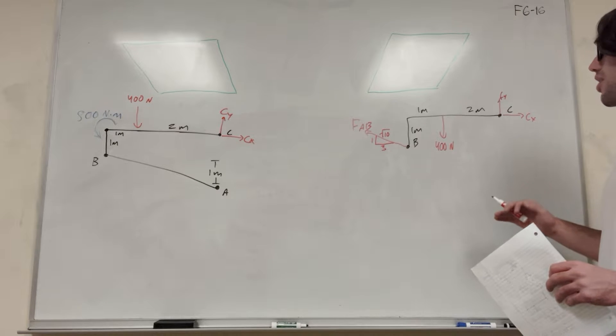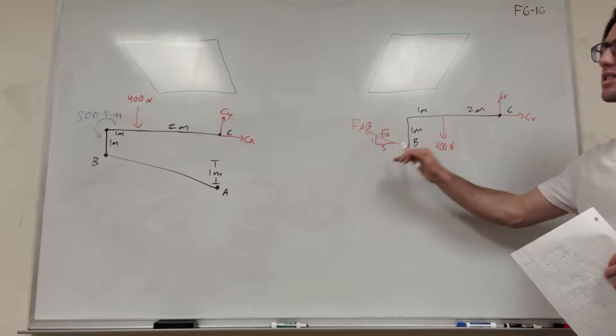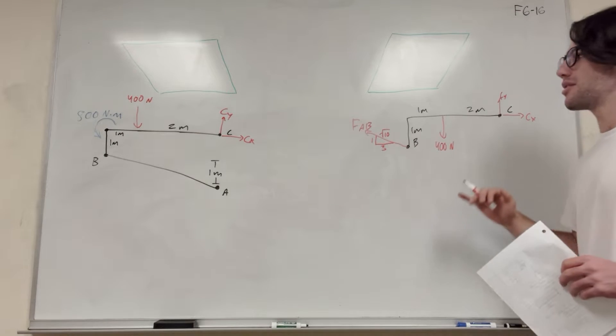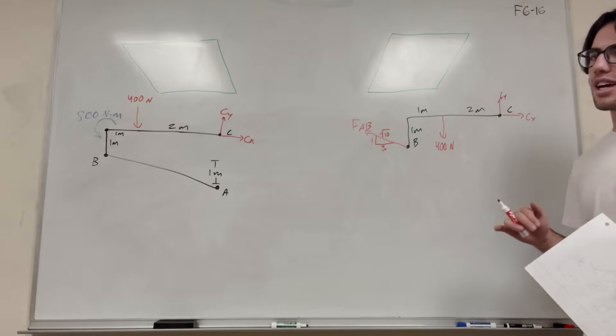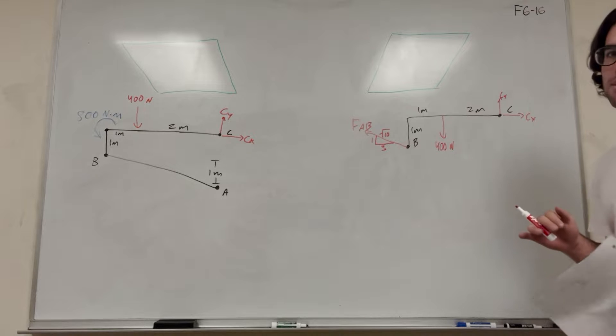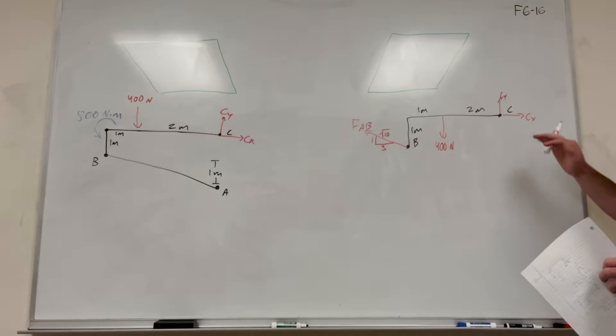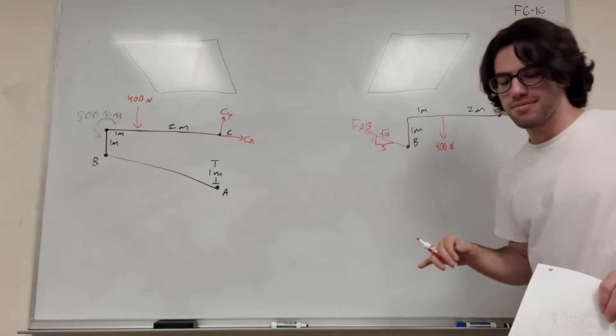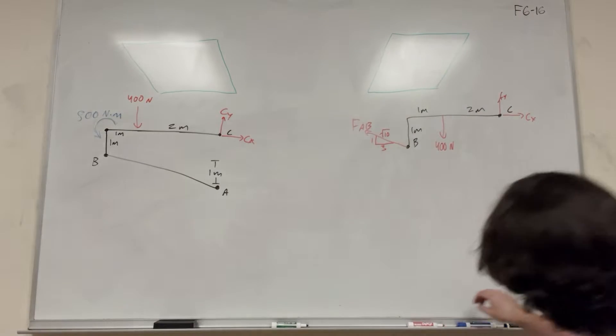So where do we want to start? We want to start by finding force AB instead of Cy or Cx. If we find force AB, then it's going to be really easy to do sum of the forces. We don't have to do any big systems of equations. So let's take the moment around C. If we take the moment around C, then Cy and Cx drop out, and it's just force AB and this 400 Newton force.